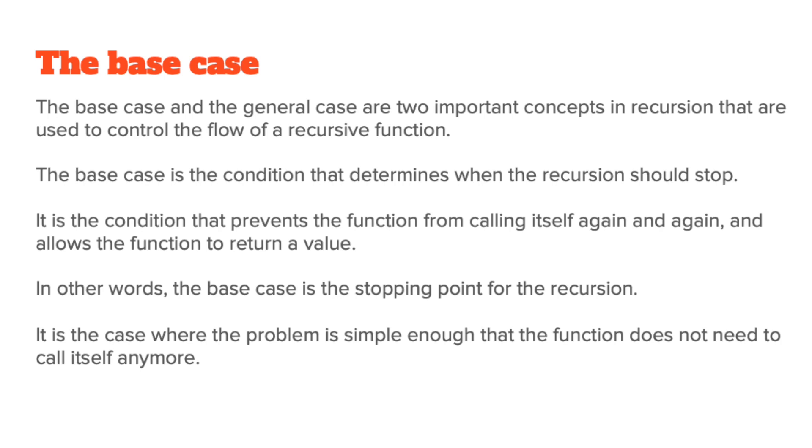Let's start by looking at the base case. The base case and the general case are two important concepts in recursion that are used to control the flow of a recursive function. The base case is the condition that determines when the recursion should stop. It's also called the exit condition. It is the condition that prevents the function from calling itself again and again and allows the function to return a value. In other words, the base case is the stopping point for recursion. It is the case where the problem is simple enough that the function does not need to call itself. If you don't have a base case in your recursive function, you're going to get into that problem we were talking about a moment ago.